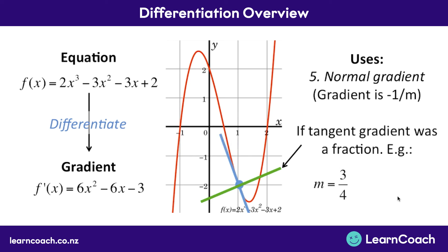If you happen to have a fraction for your original gradient, say three over four, instead of doing negative one divided by three over four, you flip the fraction upside down and make it negative. So that would become negative four over three. And that is how you find the gradient of your normal line.